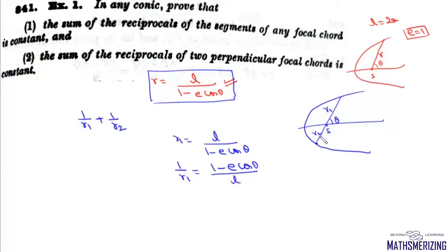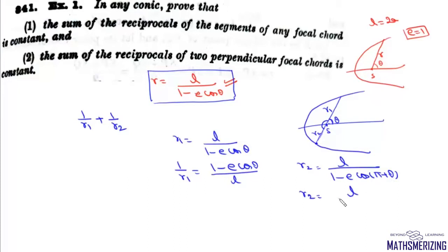For the other endpoint, the value of R will be R2 and the angle in this case will be θ + π. So we can write R2 = L/(1 + E·cosθ), and rearranging gives 1/R2 = (1 + E·cosθ)/L.